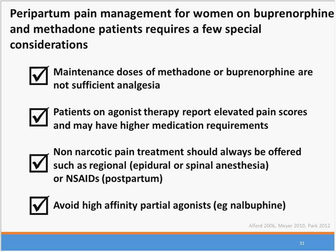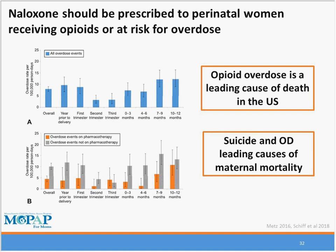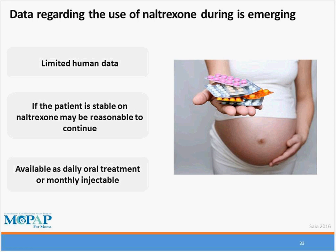Regarding pain management with buprenorphine, it's important to work with delivery teams to dispel the belief that maintenance doses of methadone or buprenorphine will be sufficient for analgesia — higher medication requirements may be expected. Avoid other high-affinity partial agonists sometimes used during labor management. Naloxone — Narcan — should be prescribed to all perinatal women receiving opioids because there is a significant escalation in risk for overdose deaths in the postpartum period, especially in women with a history of opioid use disorder not on agonist treatment. This rate of overdose escalates especially in the six to twelve months postpartum, so overdose prevention should be discussed at all times.